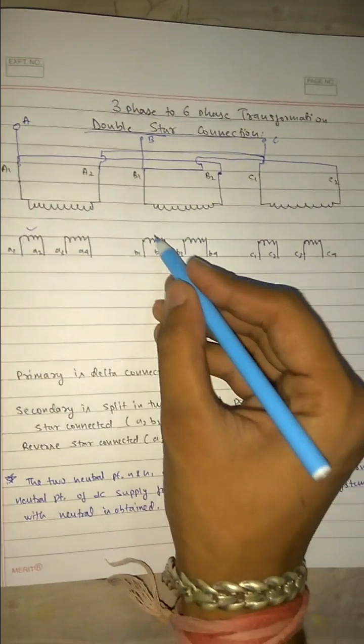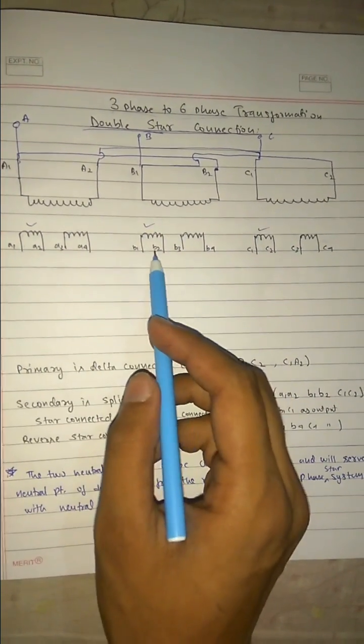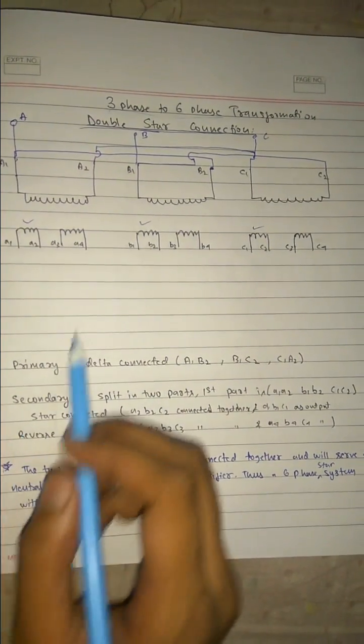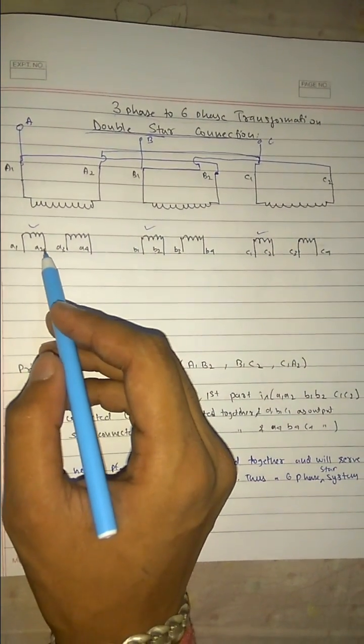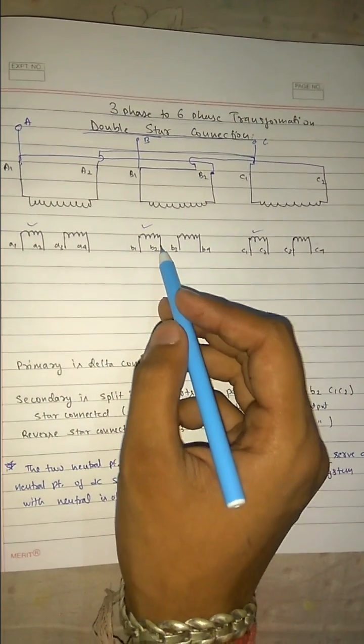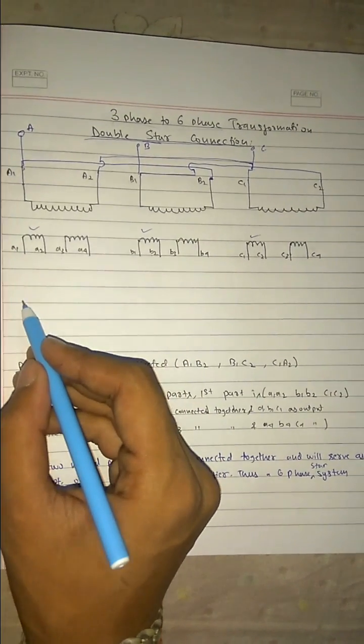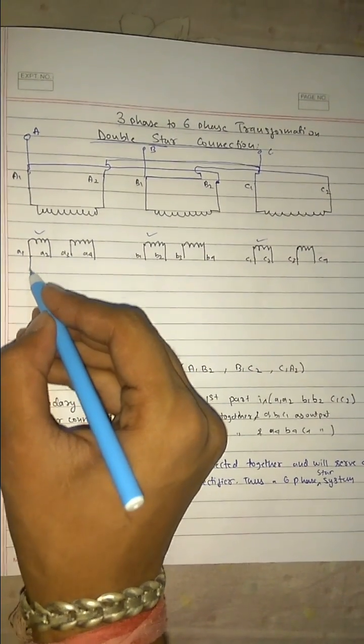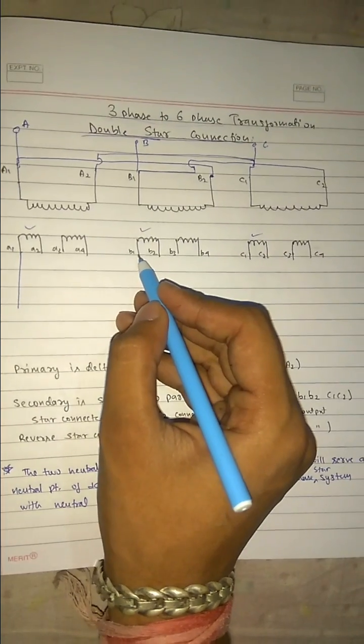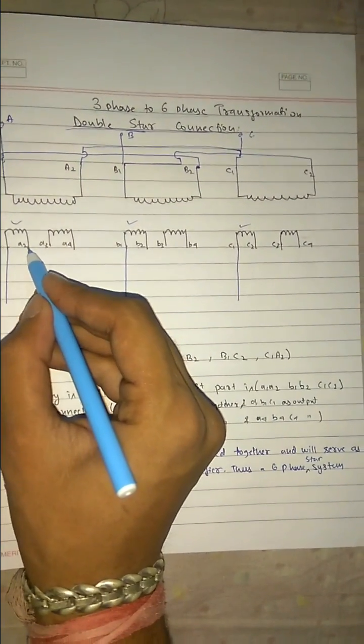These 3 are star connected. So in star connection what happens? We just join the terminals together and put it in a neutral. So here a1 we are taking as output, b1 as output, and c1 as output, and we are connecting...